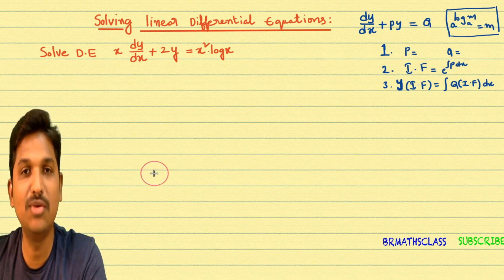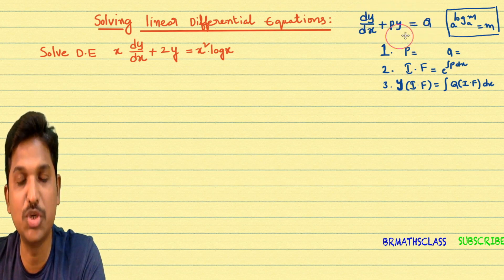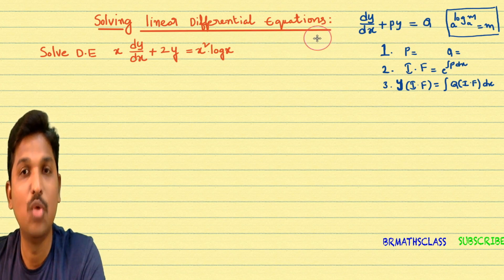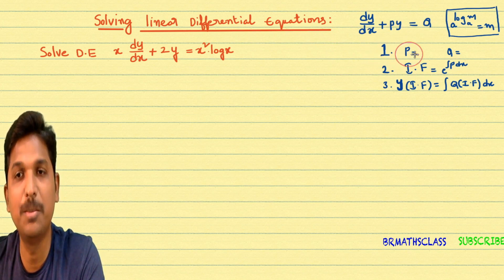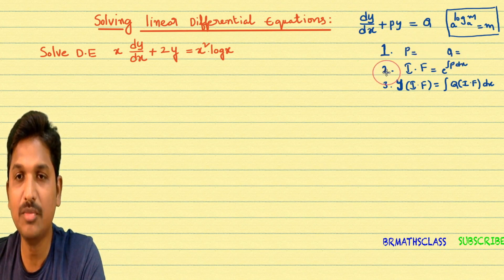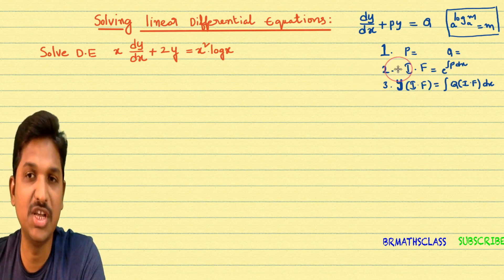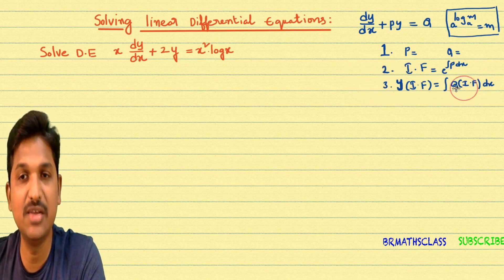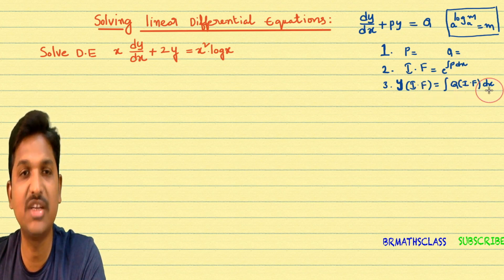What is the procedure to solve a linear differential equation? A differential equation of the form dy/dx + py = q is called a linear differential equation. The procedure is: first, we identify the functions p and q. Once you identify p and q, we calculate the integrating factor using the formula e^(∫p dx). Then we write the solution: y × (integrating factor) = ∫q × (integrating factor) dx.